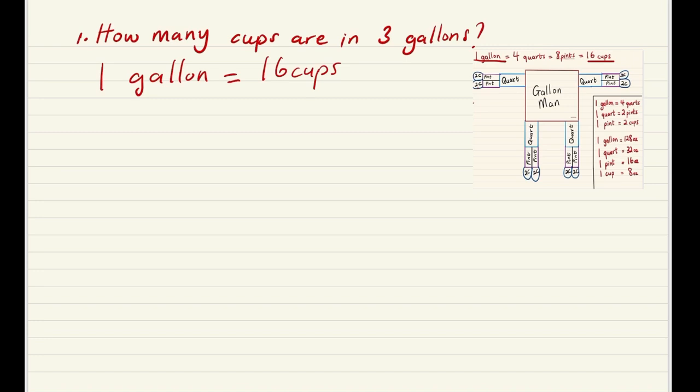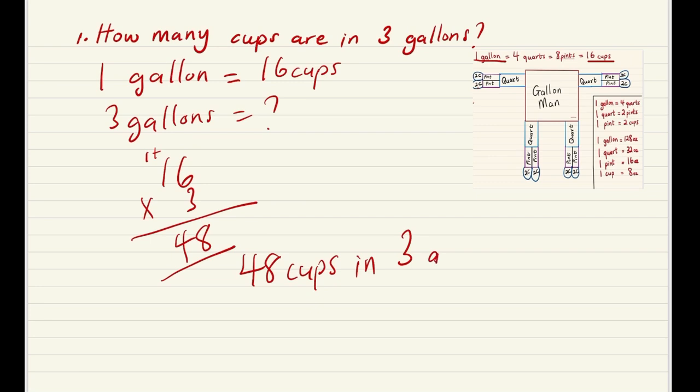If one gallon is 16 cups, three gallons is going to give us 16 times 3. So we're trying to find 3 gallons. 16 times 3: 6 times 3 is 18, and then 3 times 1 is 3, plus the 1 is 4, which equals 48. That means there are 48 cups in 3 gallons.